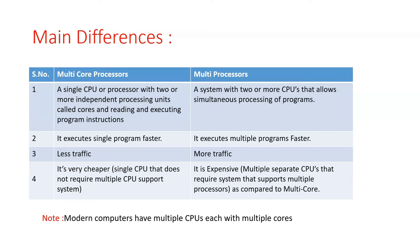Multi-core processors have one CPU connected with more than one core, and each core performs as an independent processing unit — it can read and execute program instructions. Whereas in a multi-processor system, there are two or more CPUs that allow simultaneous processing of programs.